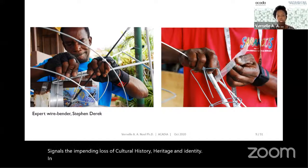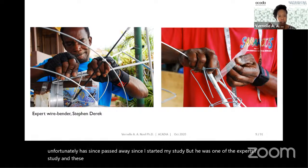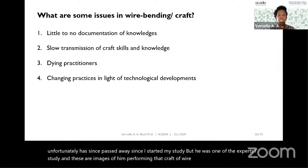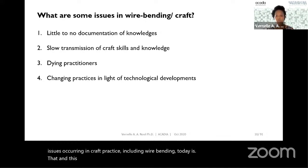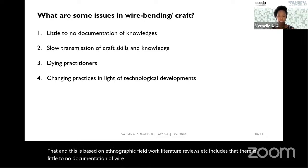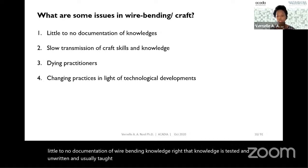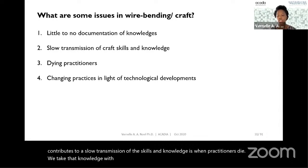These images show Stephen Derek, who was an expert wire bender. Unfortunately he has since passed away since I started my study, but these are images of him performing the craft of wire bending. Some of the issues occurring in craft practice today, based on ethnographic fieldwork and literature reviews, include that there is little to no documentation of wire bending knowledge — it is tacit and unwritten, usually taught by a lengthy apprenticeship. This contributes to a slow transmission of skills and knowledge. When practitioners die, they take that knowledge with them, alongside changes in carnival due to technological developments happening globally.